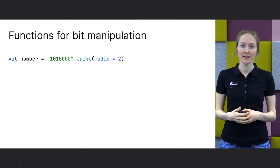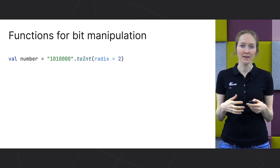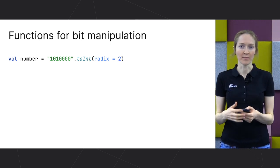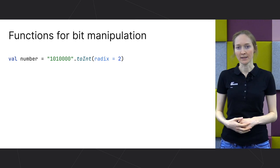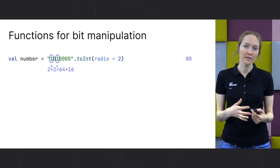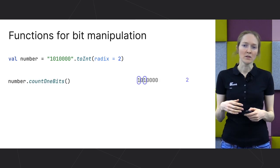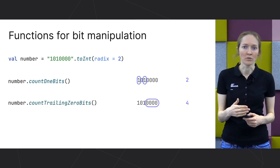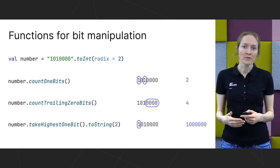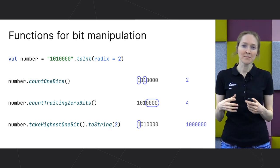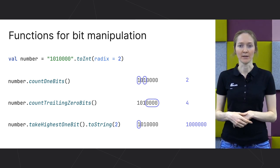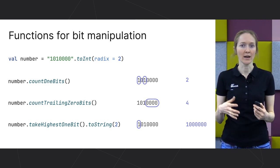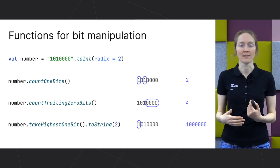The next topic is functions for bit manipulation. They've been available for quite a while already, and most of them have become stable in this release. If you write an algorithm that requires bit manipulation, check out this functionality. For example, you can count all 1-bits in a binary representation of a number, or count leading or trailing 1 or 0 bits, or find the highest 1 bit. It's important to have these operations in the standard library — we provide an efficient implementation of them, also for Kotlin/Native. Please share with us what other bit manipulation functions you'd like to see.